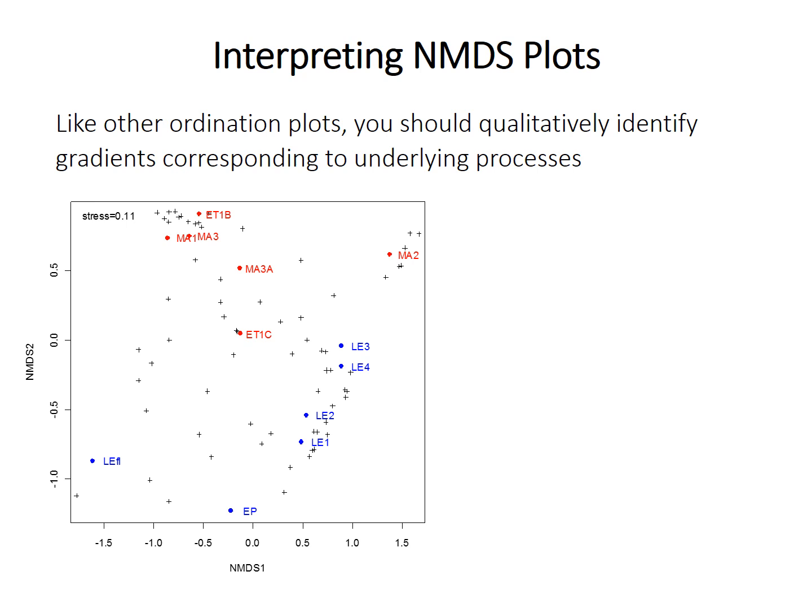You should use your knowledge and other information about the samples to qualitatively identify gradients. In this example, the samples are color-coded by region — the red ones and blue ones come from different places around the world — and you can see a nice separation between the two regions. You can color-code points or use different symbols to visually look for gradients, clustering, or separation between groups.